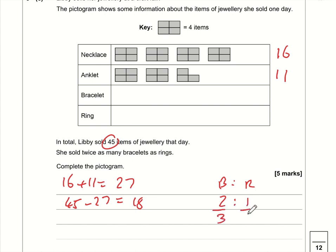So what is one-third of 18? Well, one-third of 18, that is 18 divided by 3, which is 6. So rings is 6. So if one-third is 6, then two-thirds is 12. And you might just want to double-check: do these numbers add up to 45? Well, the answer is yes they do, and we can clearly see we've got twice as many bracelets as rings.